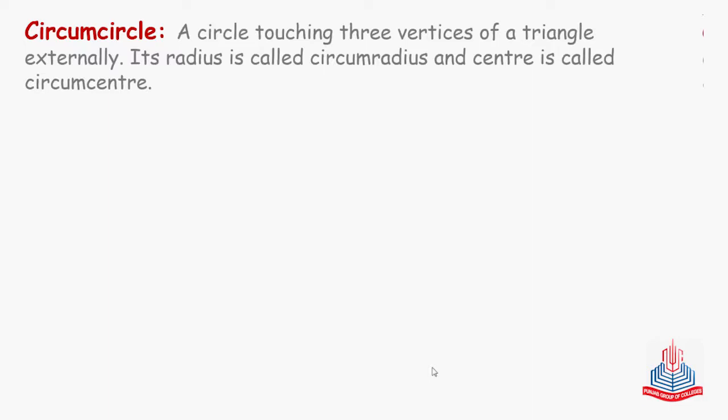The next circle is the circumcircle — a circle touching three vertices of a triangle externally. Its radius is called circumradius and its center is called circumcenter. A circle that passes through all three vertices of a triangle is called a circumcircle. The word 'externally' is used, but if a circle touches all three vertices, it cannot be drawn internally — it will always be a circle that lies outside the triangle.